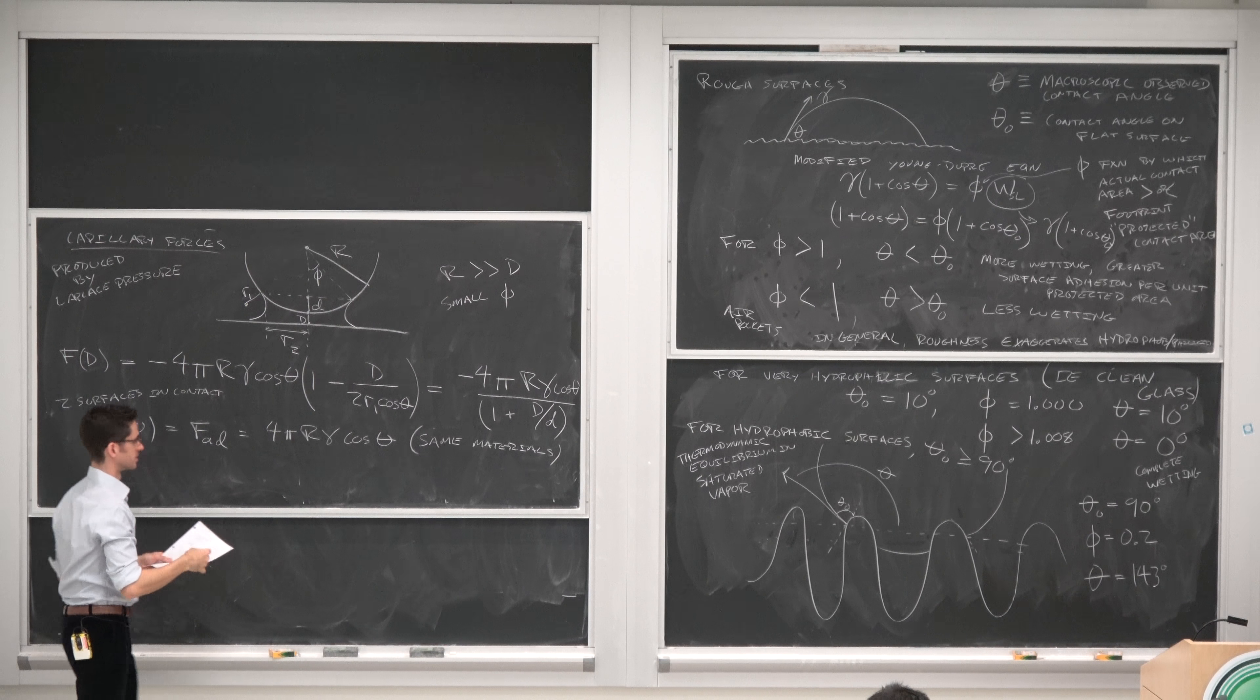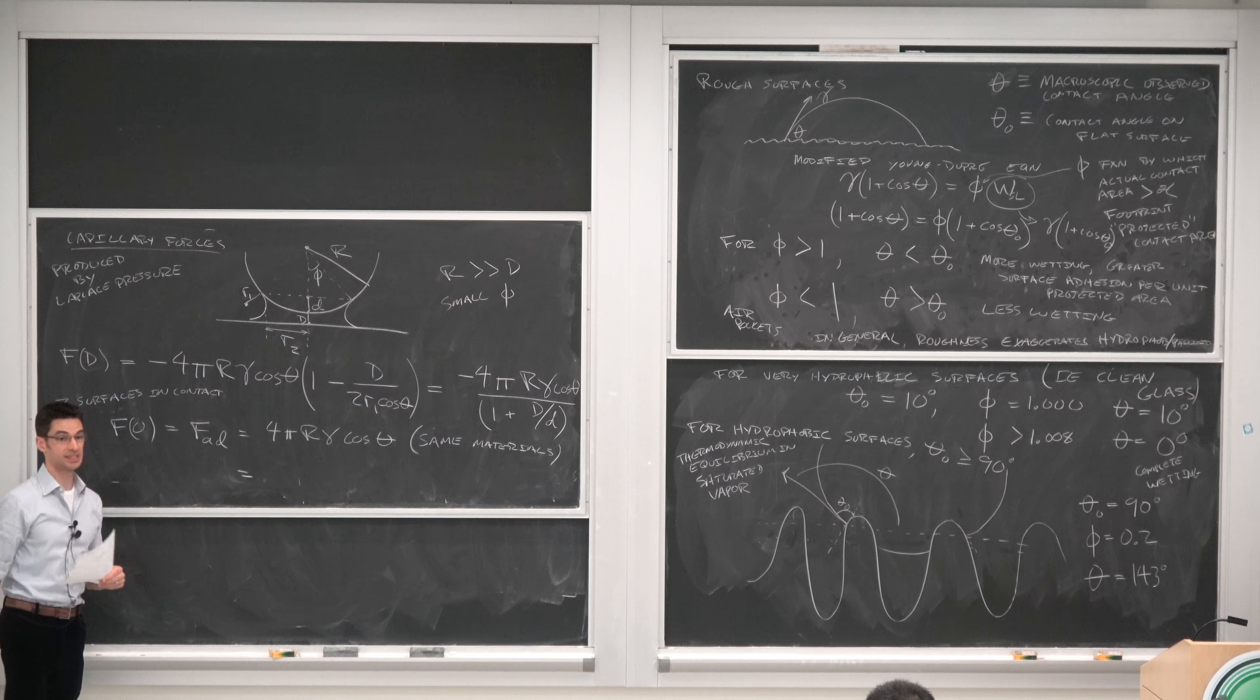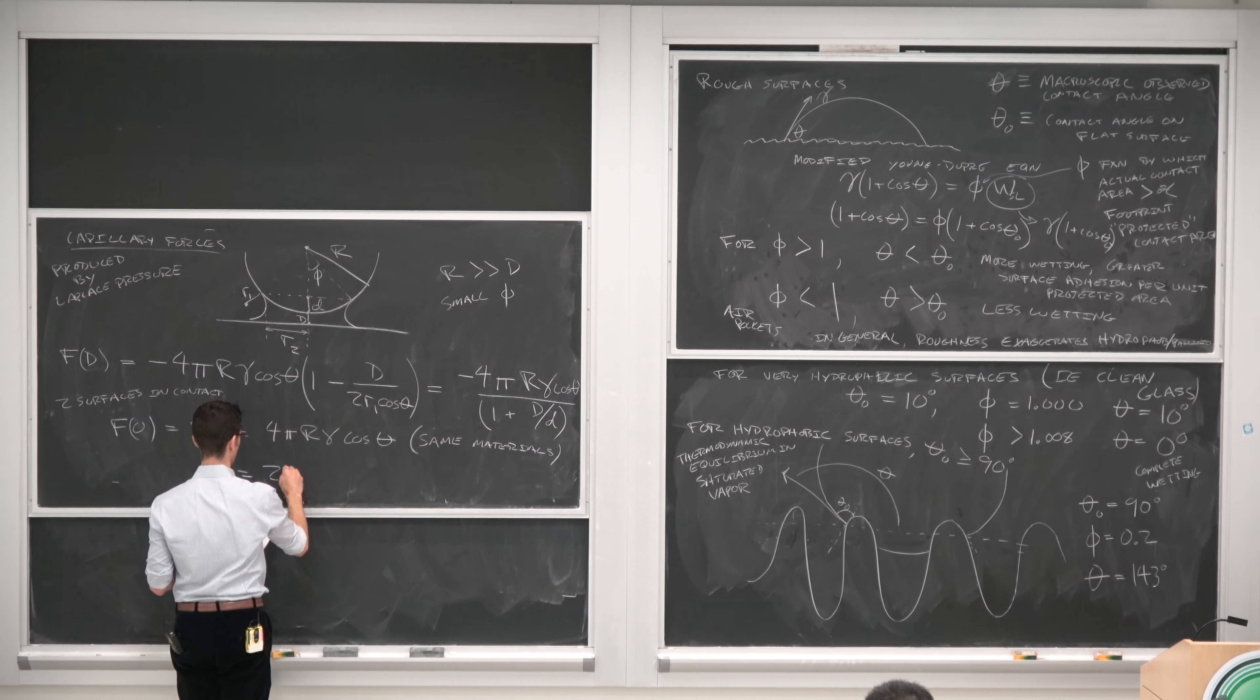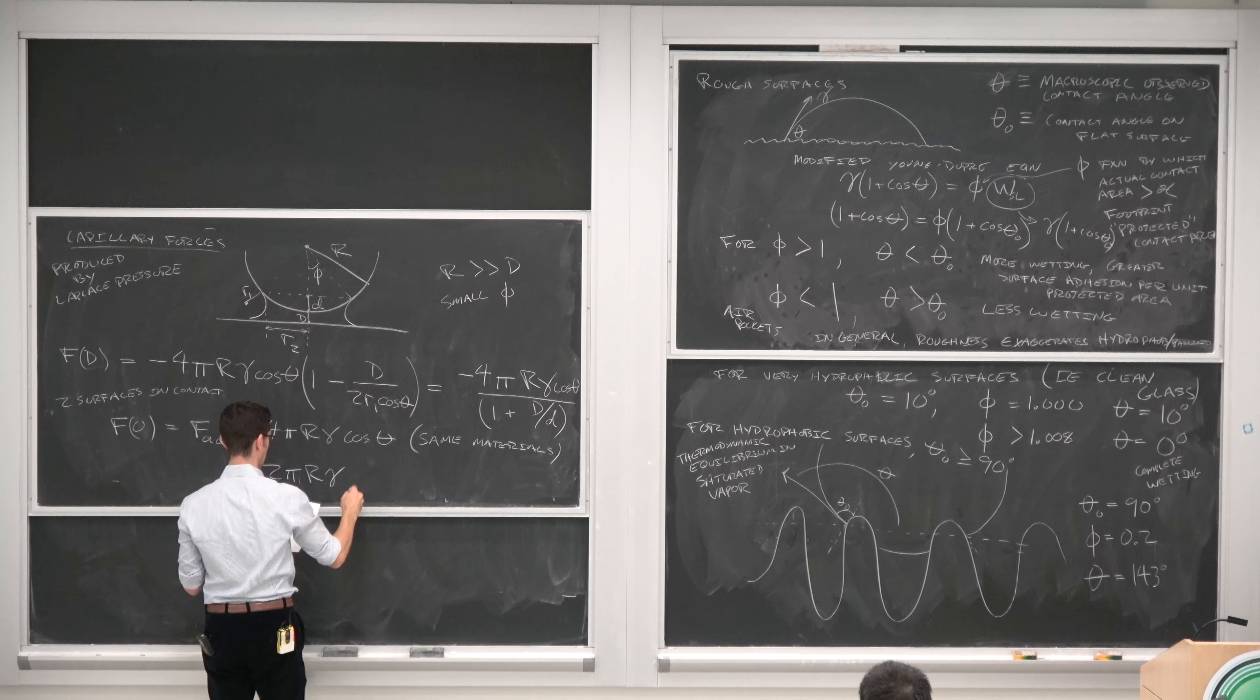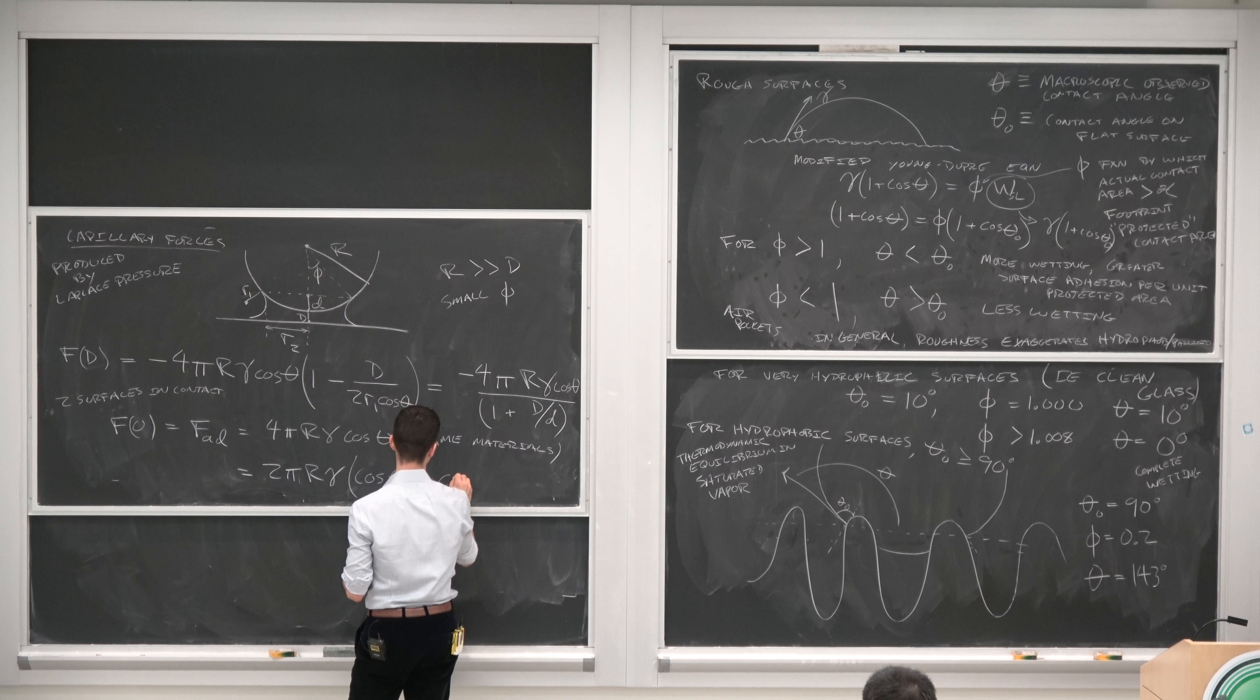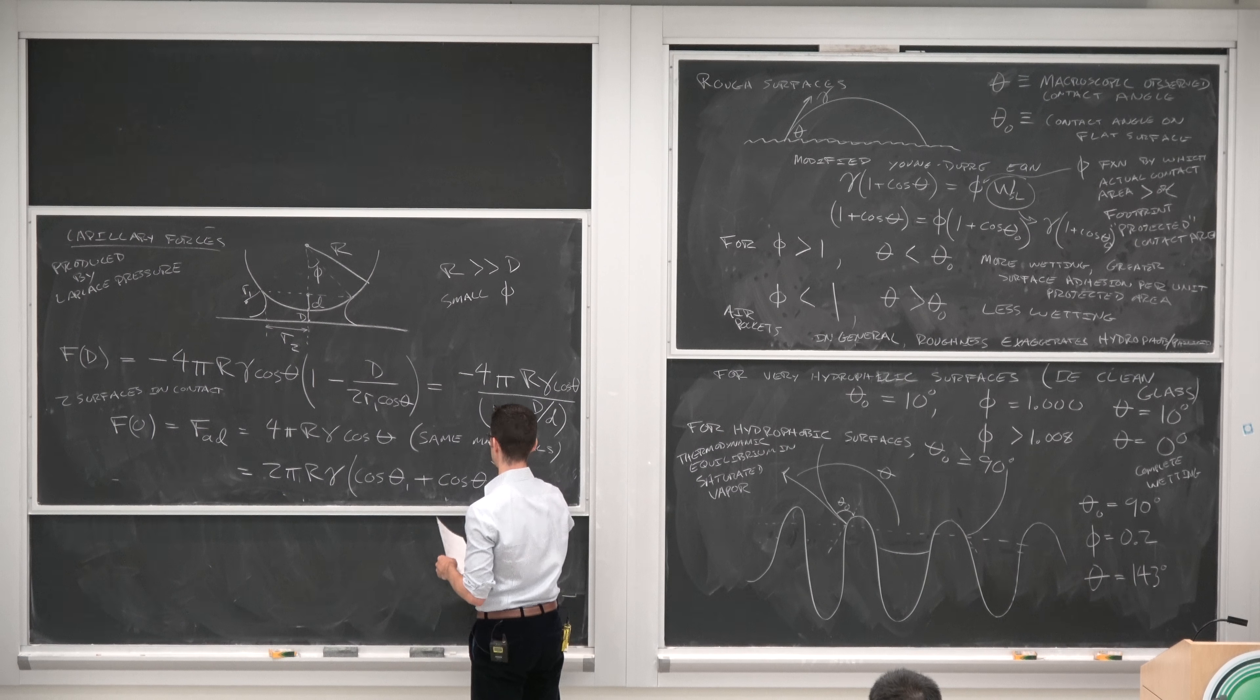So like two pieces of glass or something. But if we have two different materials, then the contact angle on each material would be different. So in that case, we have 2 pi R gamma times cosine of the liquid on surface 1 plus cosine of the liquid on surface 2.